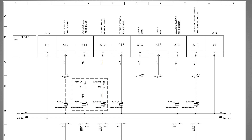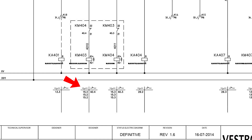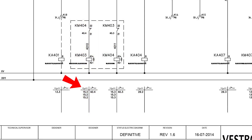will turn on KM404 through the normally closed contact of KM403. This means both contactors KM403 and KM404 are interlocked with each other, and only one contactor can be turned on at once. The NO and NC contact symbols along with the page number are mentioned under the coils of these contactors. The wiring for the normally open contacts is mentioned on page number 15, column number 2 and column number 3.